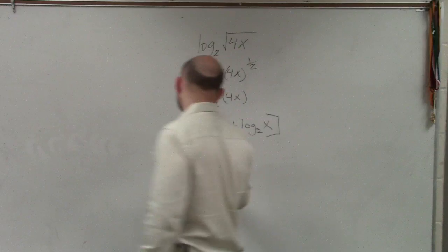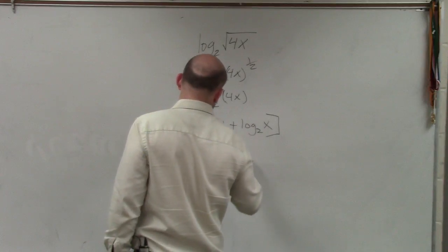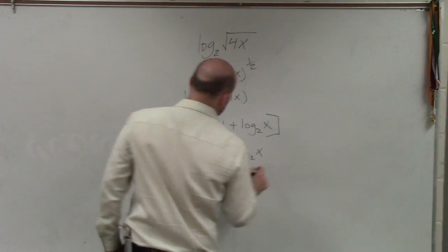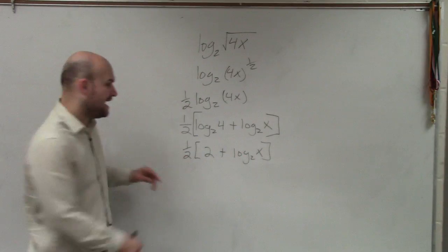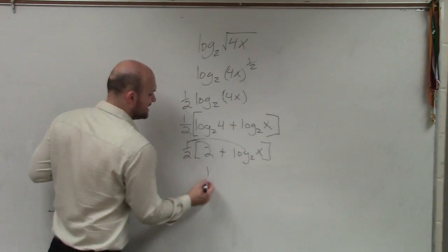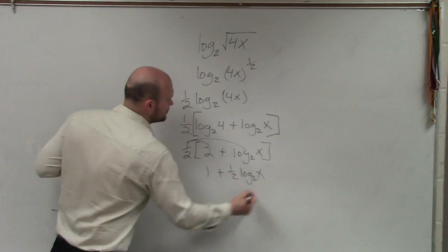2. So that's 1 half times 2 plus log base 2 of x. And if you follow Lee's process there, if you distribute the 1 half, your final answer would be 1 plus 1 half log base 2 of x.